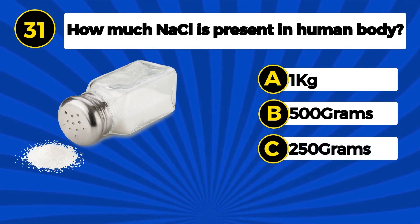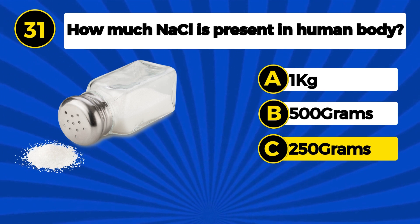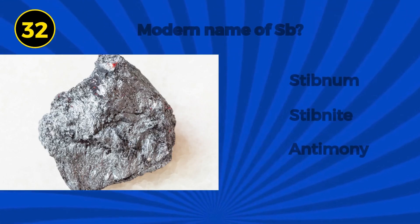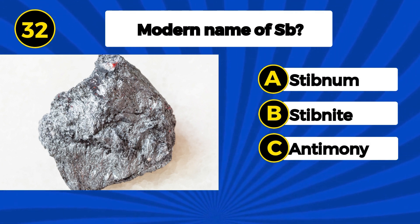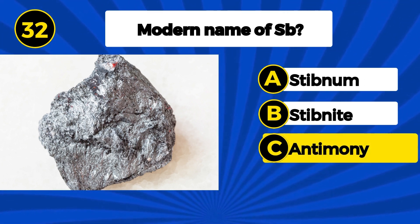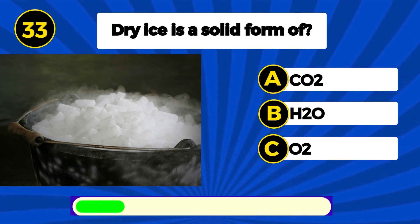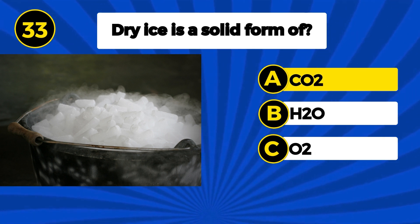How much NaCl is present in the human body? 250 grams. Modern name of Sb? Antimony. Dry ice is a solid form of? Carbon dioxide.